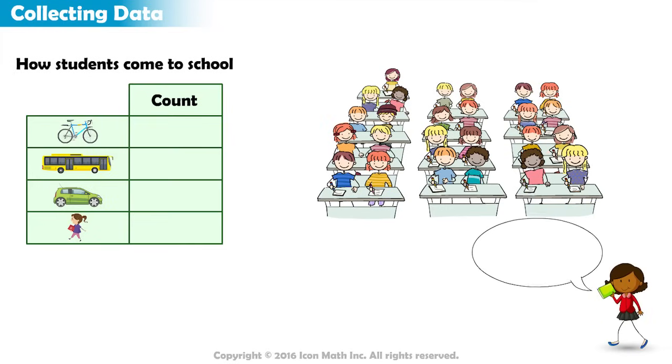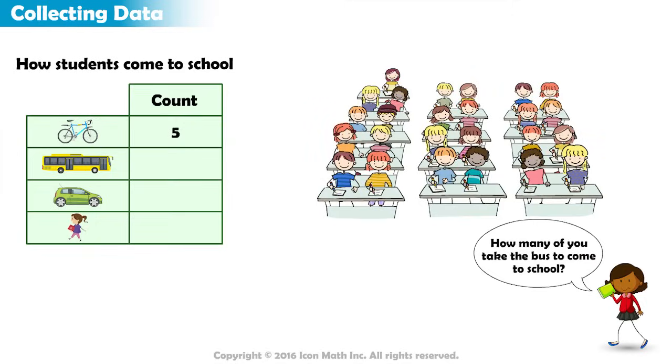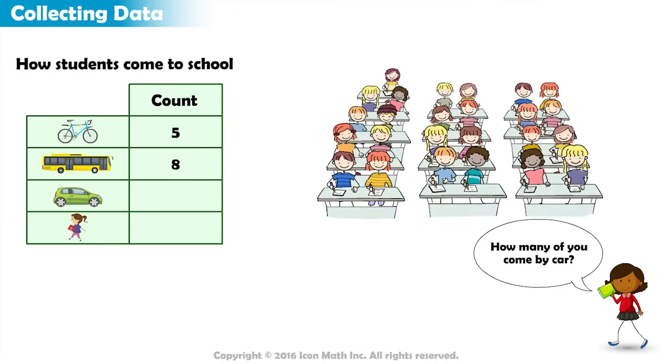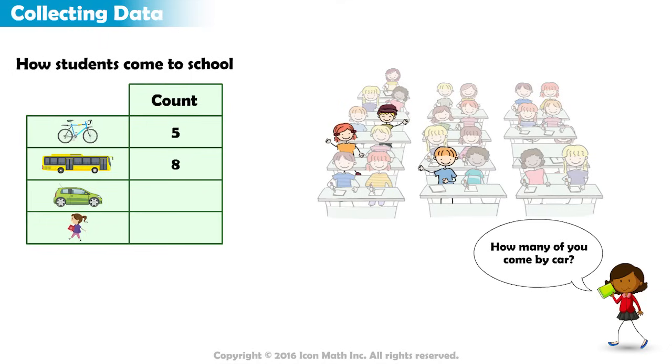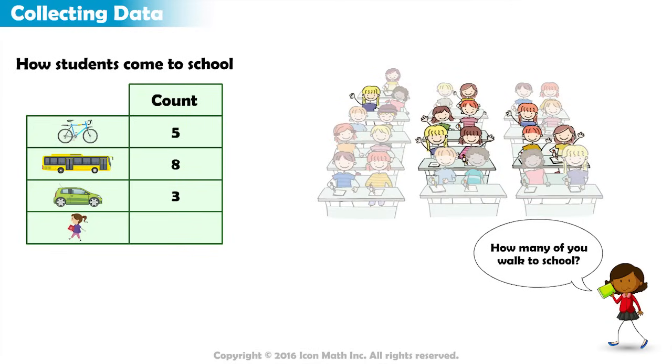Students who take their bikes, raise your hands. So, five of you take their bikes to school. How many take the bus? Eight. How many come by car? Three. And how many of you walk to school? Nine students. Excellent!